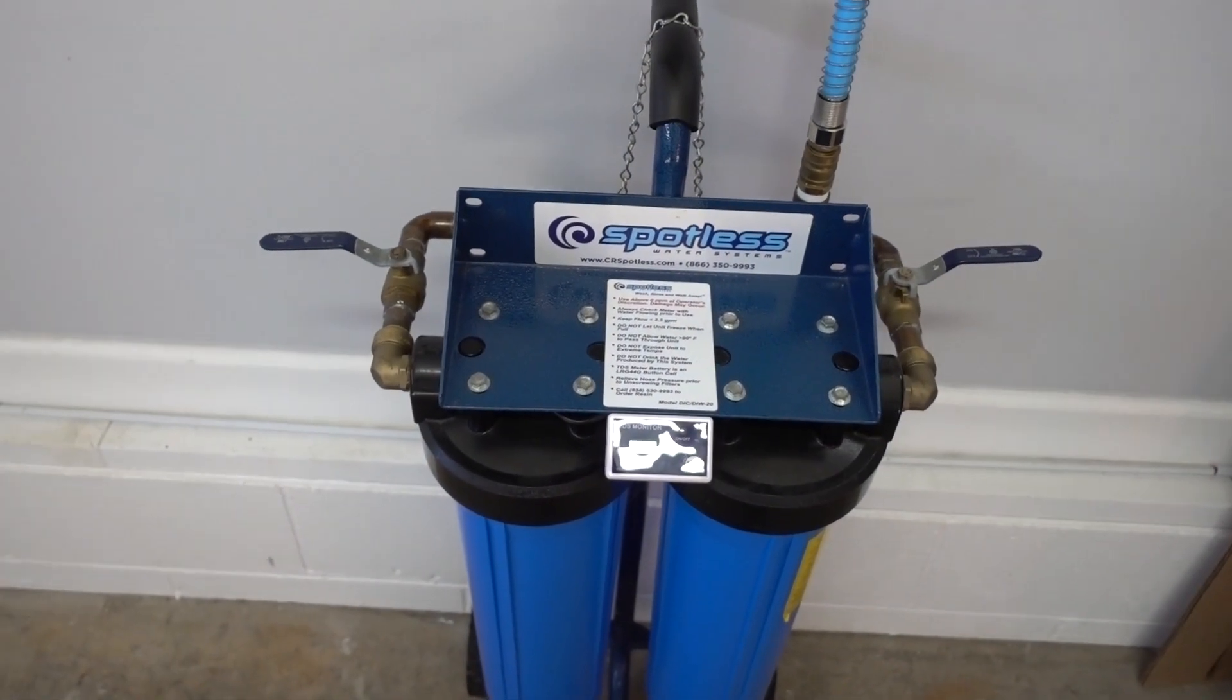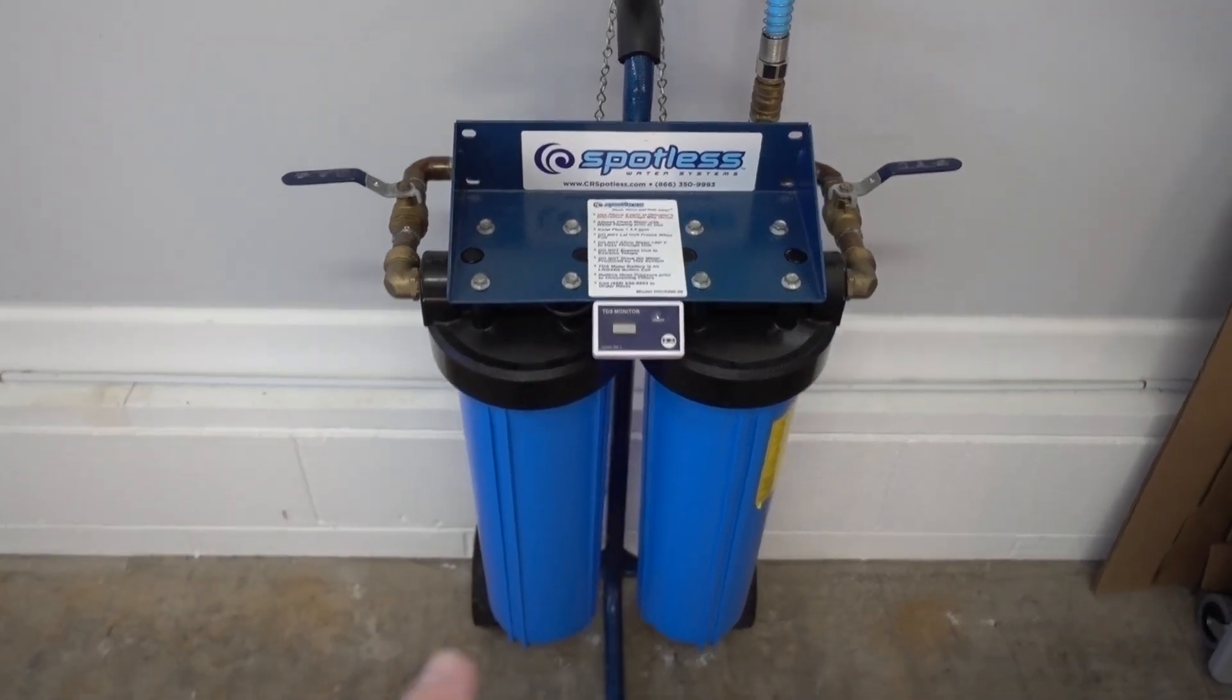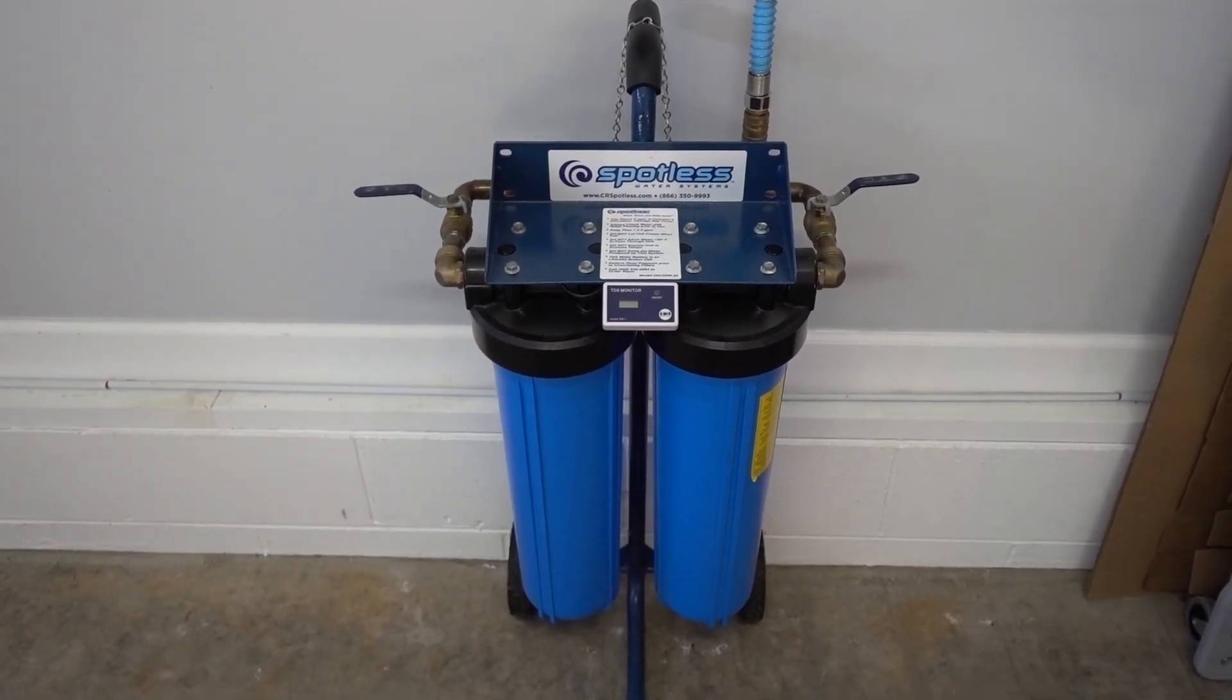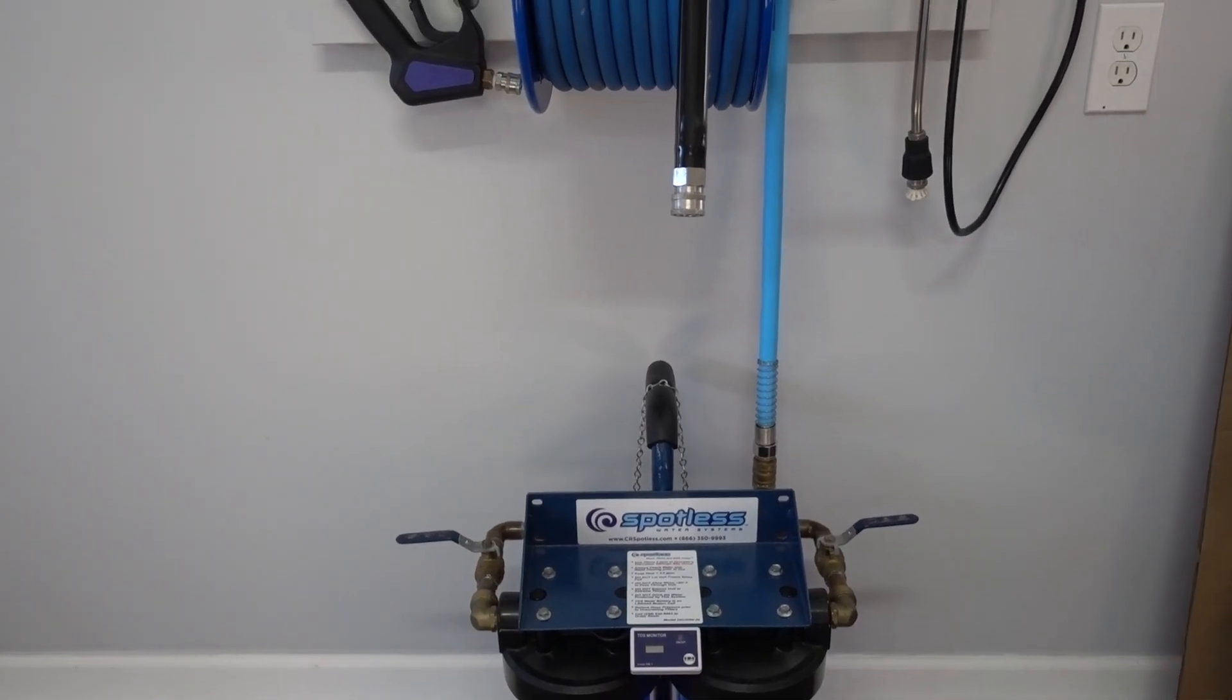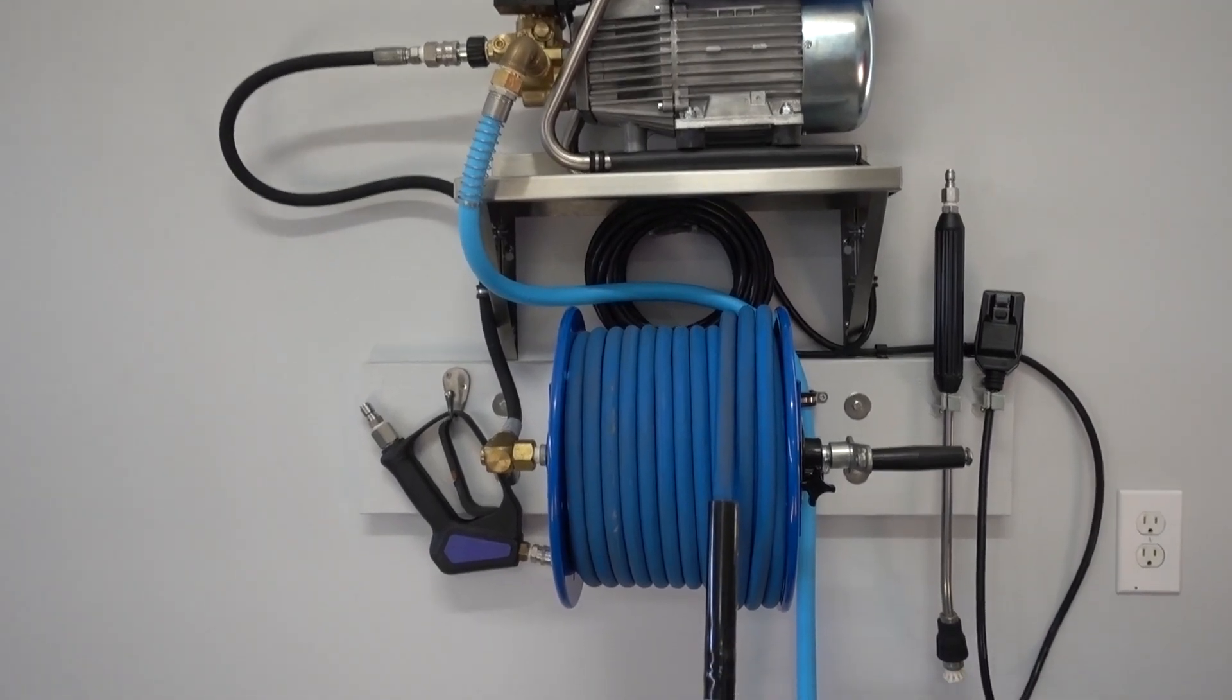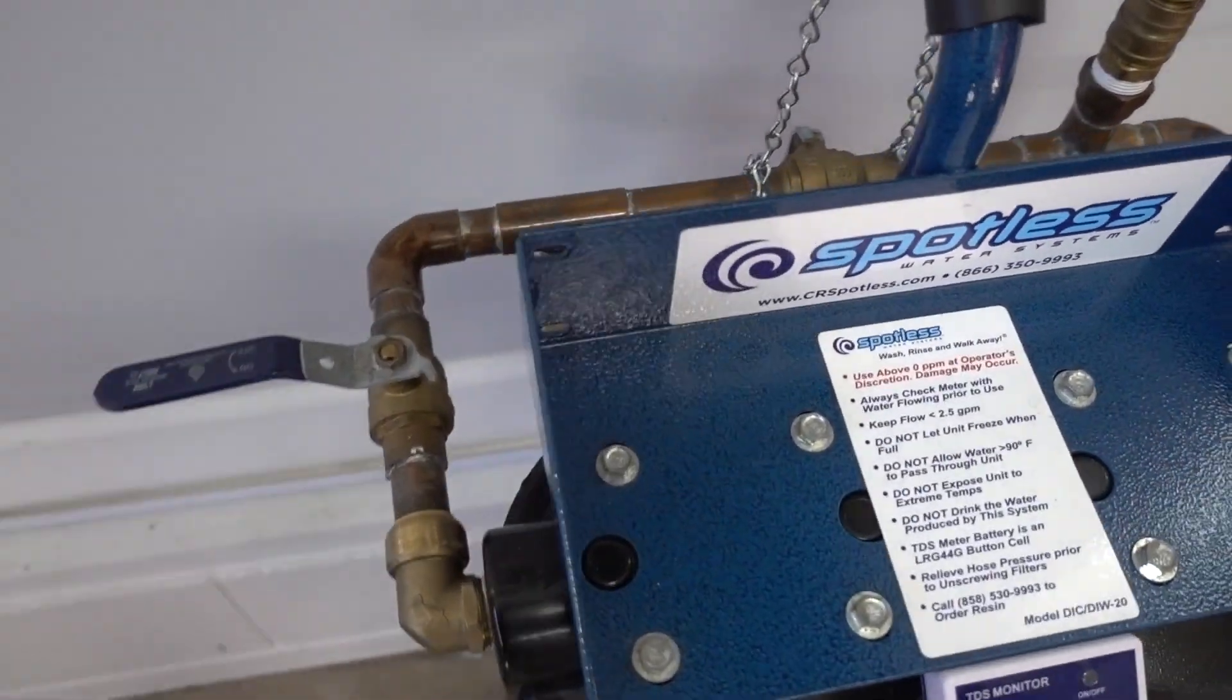So next on the list is this spotless water filter. I have it on wheels. That way I was able to move it around. It would be nice to have it mounted on the wall, but it's not essential right now because this whole system is subject to move. But I wanted to share how I did the piping.